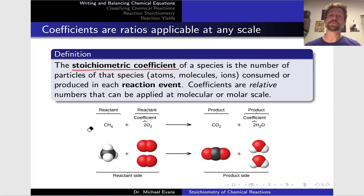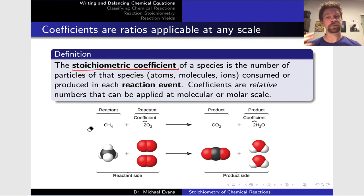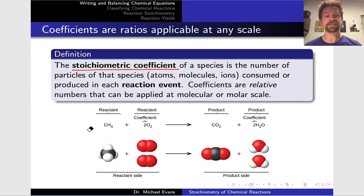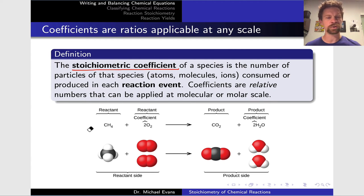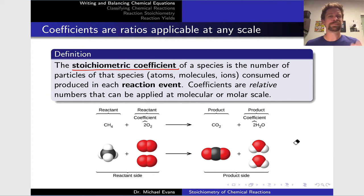On the slide we see the chemical equation as well as a representation of the reaction using atomic or molecular level models: CH4 with one carbon and four hydrogens, two oxygen molecules going to CO2 and two molecules of water, H2O. The number of a particular type of molecule that combines in a chemical reaction is called its stoichiometric coefficient — the number that appears before the chemical formula in the balanced chemical equation. It's the number of particles of that species, be it an atom, molecule, or ion, that is consumed or produced in a single reaction event.